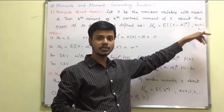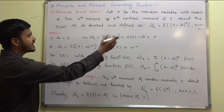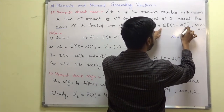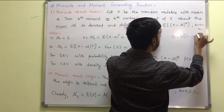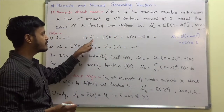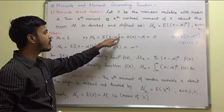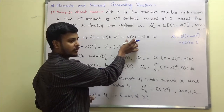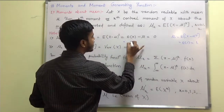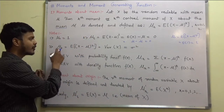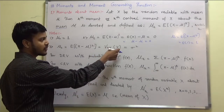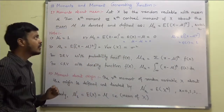Here r can take values 0, 1, 2, and so on. From this definition we get different properties: mu_0 is expectation of (x minus mu)^0, which is expectation of 1, equal to 1. mu_1 is expectation of (x minus mu)^1, which equals expectation of x minus mu, and since expectation of x is mu, this gives mu minus mu equals 0. mu_2 is the straightforward definition of variance: expectation of (x minus mu)^2 equals variance of x, denoted sigma.